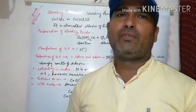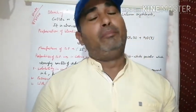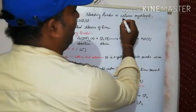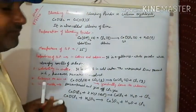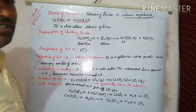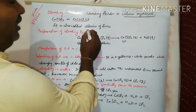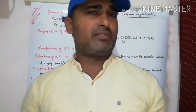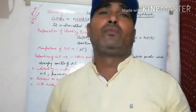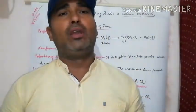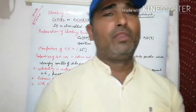If in a question the usage of bleaching powder is asked, write these uses. Now preparation of bleaching powder - in which way we will manufacture bleaching powder. Bleaching powder is calcium oxychloride. The formula is CaOCl₂ or Ca(OCl)Cl. It is also called chlorine of lime. We manufacture bleaching powder with the help of lime.